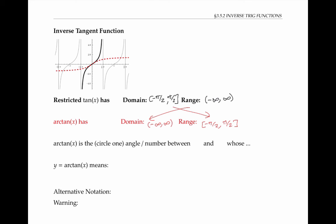Once again, tangent takes us from angles to numbers, and so arc tan takes us from numbers back to angles. For example, tangent of pi over four is one,